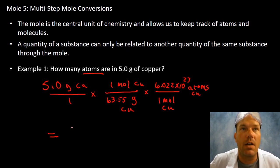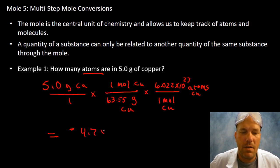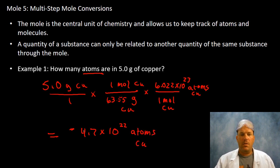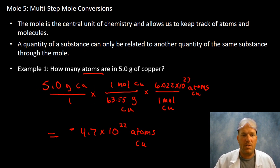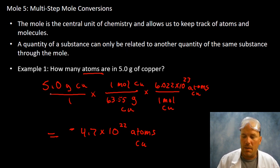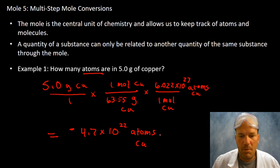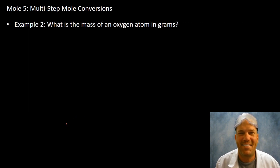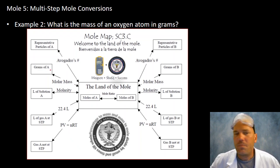Plug and chug into your calculator and you should get an answer of 4.7 × 10²² atoms of copper. That is with 2 sig figs — our given information has a minimum of 2 sig figs — so that's an acceptable answer for example number one.